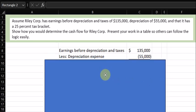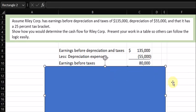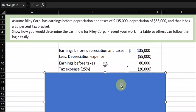Then what we have to do is subtract out the depreciation. We're working down an income statement, and that gives us earnings before taxes. Now that we have that, we have to calculate the tax, which is given as 25%. So we take 25% of the earnings before taxes.